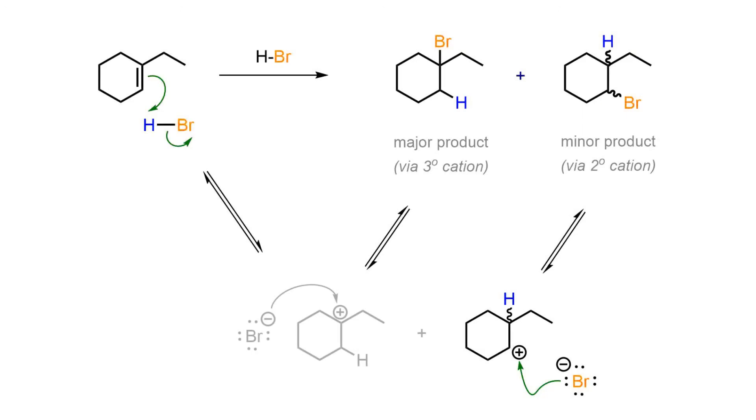In a separate process, the secondary carbocation is attacked by bromide nucleophile. However, this results in a mixture of four possible stereoisomers.